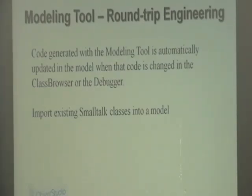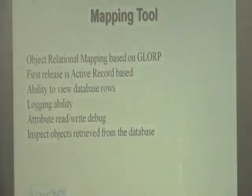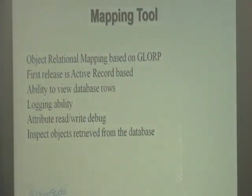You can also import existing Smalltalk classes into the modeling tool and use them there. The mapping tool is an object-relational mapping tool based on Glorp. The first version is active record-based.